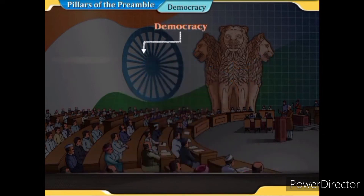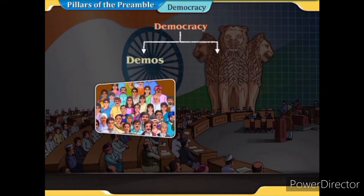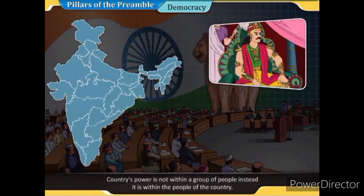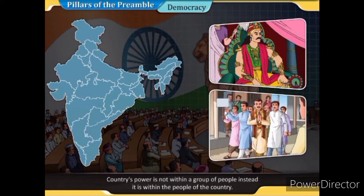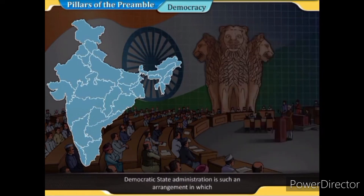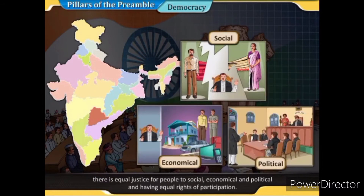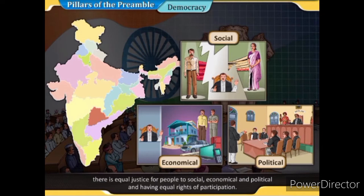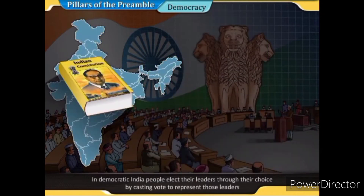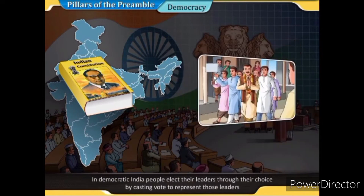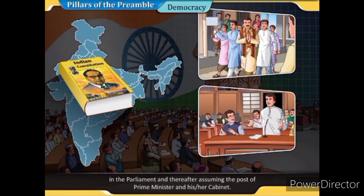The word 'democracy' is derived from the Greek word 'dimos' meaning people and 'kratia' meaning power. The country's power is not within a group of people but within all the people of the country. Democratic state administration provides equal justice — social, economic and political — and equal rights of participation. In democratic India, people elect their leaders through voting to represent them in parliament, thereafter assuming the posts of prime minister and cabinet.